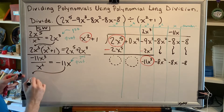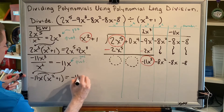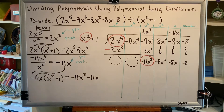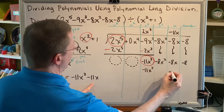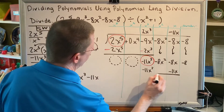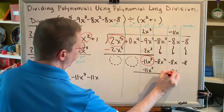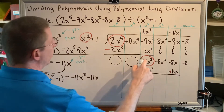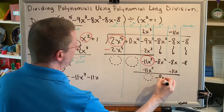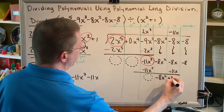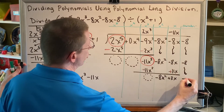We take this and multiply it by the entire denominator, x squared plus 1, using the distributive property, and we get negative 11x cubed minus 11x. This result goes beneath the lowest under in the appropriate columns: negative 11x cubed in the x cubed column and negative 11x in the x column. Draw the line, change the sign, then combine. Negative 11x cubed plus 11x cubed makes 0. Negative 8x squared combined with nothing is still negative 8x squared. Minus 8x plus 11x makes plus 3x. Bring down all terms from your original numerator that have not been changed: minus 8.